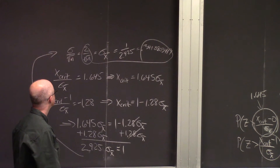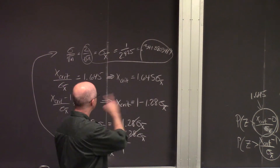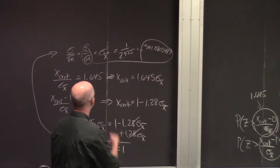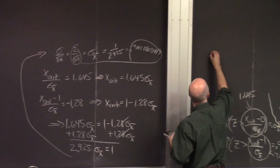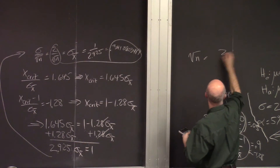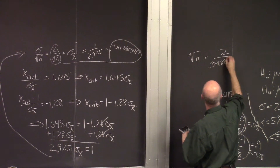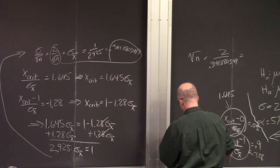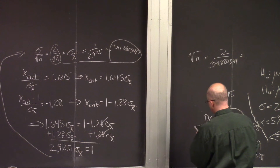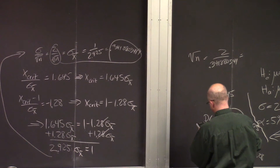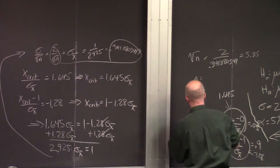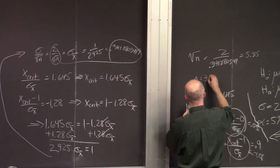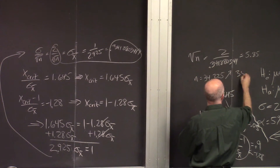We're almost done. Set sigma sub x-bar equal to sigma over square root of n, which is 2 over square root of n, equal to 0.34188. Solving: square root of n equals 2 divided by 0.34188, which is approximately 5.85. Squaring both sides: n equals approximately 34.22, which you round up to 35. That's the answer.